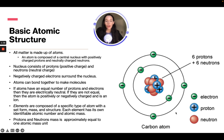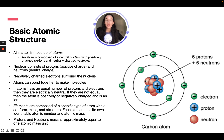This carbon atom is neutral because we have six electrons and six protons. But if we had one less electron, this would be a positively charged ion because we would have one extra proton, which is positively charged. In comparison, if we had seven electrons on the outside and only six protons in the nucleus, then we would have a negatively charged ion because we have an extra electron.